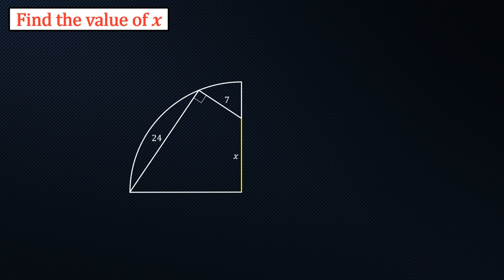We have a quarter circle and from the one corner of the quarter circle we have a line of 24 units and another line of seven units that meet at a 90 degree angle.